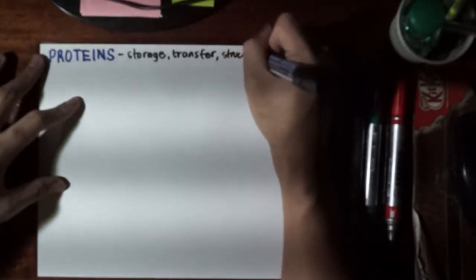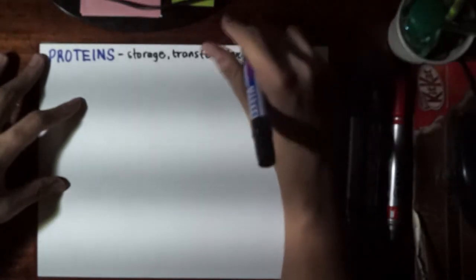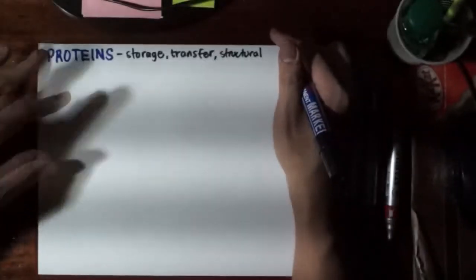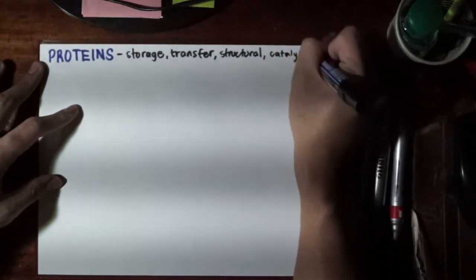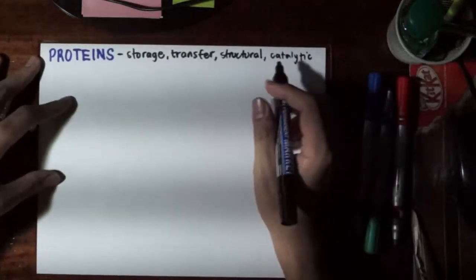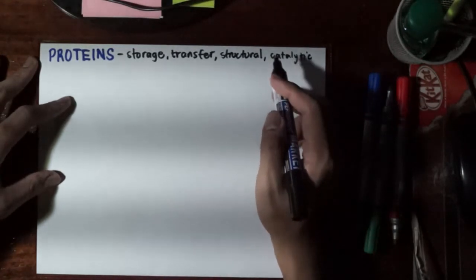We have structural proteins that make up many of our tissues, such as collagen and elastin for the skin. We even have catalytic proteins which are enzymes, and many more. There are many various functions for proteins.